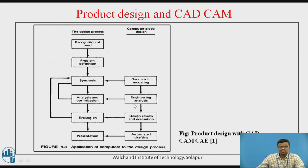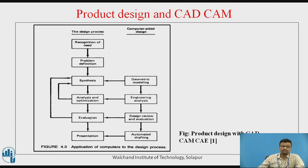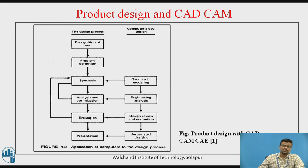In the analysis and optimization stage, different engineering analysis software can be used. In the evaluation stage, both validation and optimization can be done regarding the 3D modeling and engineering analysis output. During the presentation part, we use computer-aided drafting sheets with the help of modeling software like CATIA or SolidWorks — just clicking on the drafting icon to create front view, top view, side view, or isometric view very easily.